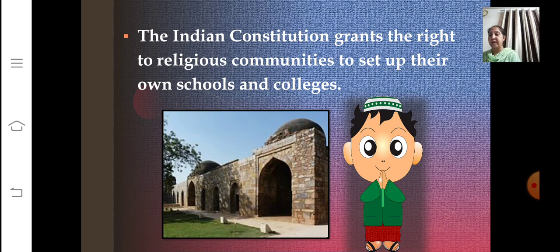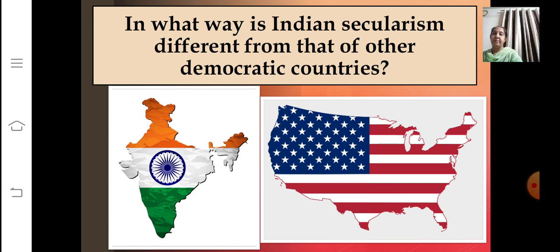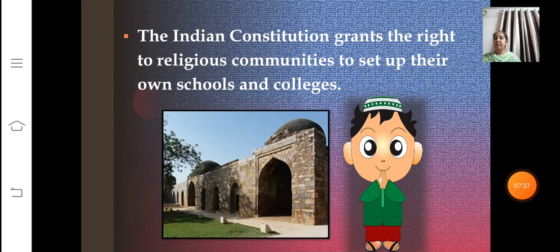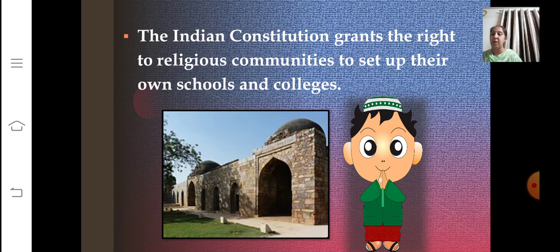The intervention of the state can also be in the form of support — not only to oppose something, but to support also. The Indian constitution grants the right to religious communities to set up their own schools and colleges. It also gives them financial aid on a non-preferential basis. The state has the power to intervene if any law supports one particular religion unfairly.